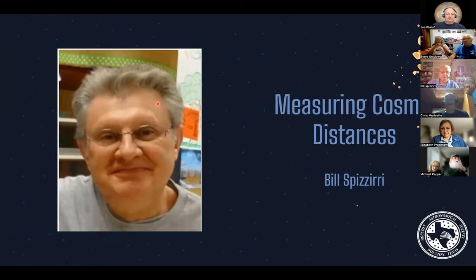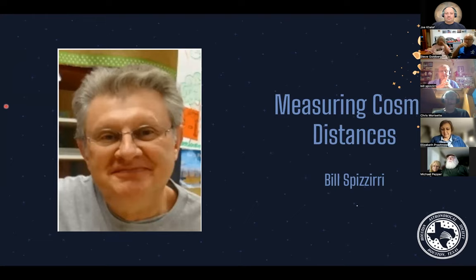We've got a wonderful presentation tonight on measuring cosmic distances. This question comes up a lot during outreach. When we're at a dark sky area looking into the night sky, as beautiful as it may be, we are essentially seeing it only in 2D. The bright stars do seem a bit closer, but is that really the case?